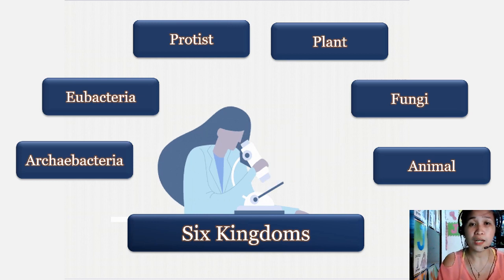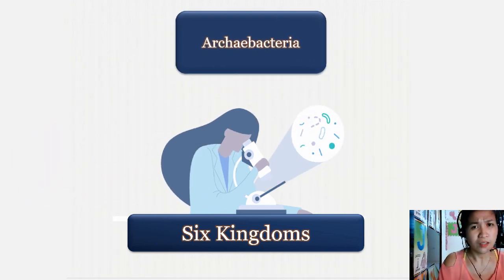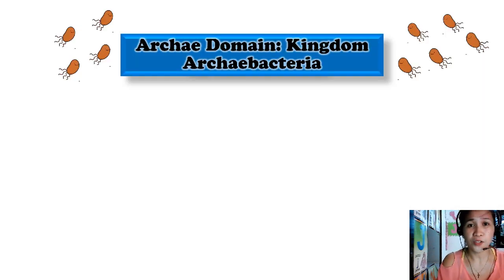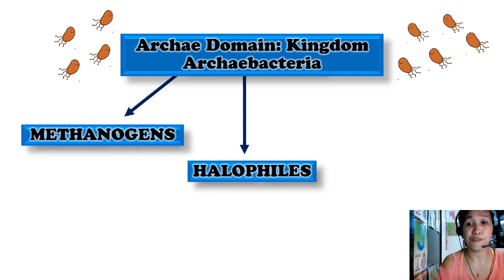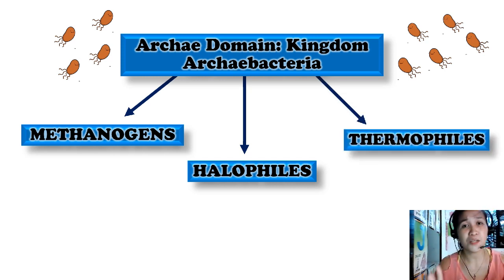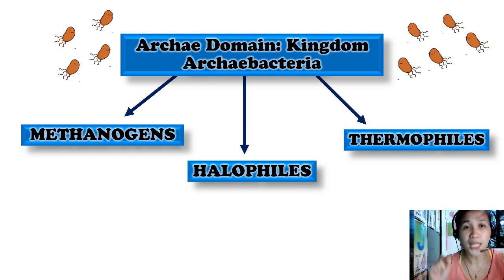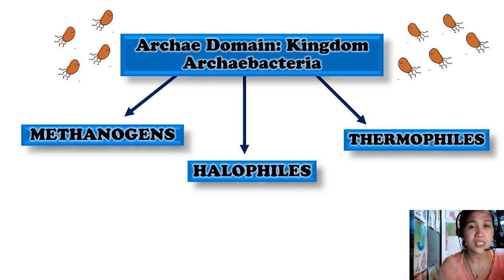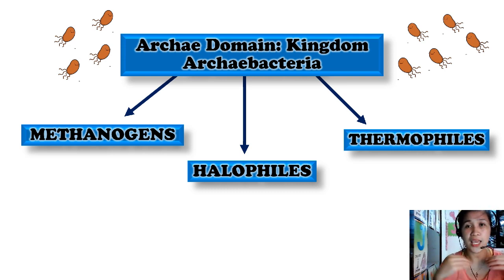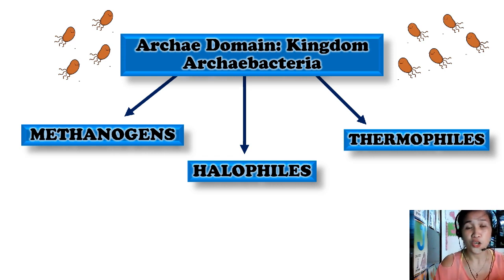First, we are going to talk about archaea bacteria. Archaea, or the domain archaea belonging to kingdom archaea bacteria, has three groups: methanogens, halophiles, and thermophiles. Organisms that belong to this kingdom are all microscopic, meaning they are so small as to be visible only with the use of a microscope. They live in various places, some even in the most severe or extreme environments characterized by harsh conditions beyond the optimal range for human development.